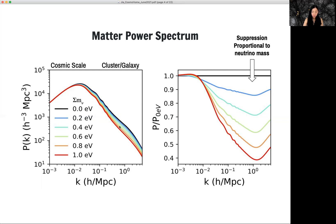And if we look at the ratio plot, it's more clear on the right-hand side. The level of suppression is proportional to the mass of neutrinos. The higher the neutrino masses are the larger the suppressions we see in the matter power spectrum.